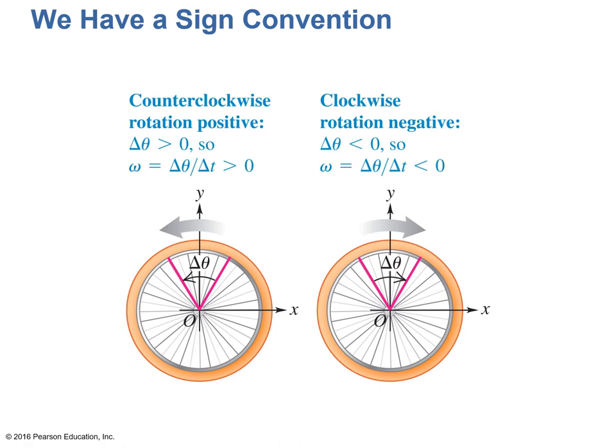There's also a sign convention. If your wheel is rotating counterclockwise, then the rotation is positive. If it's rotating clockwise, then your rotation is negative.